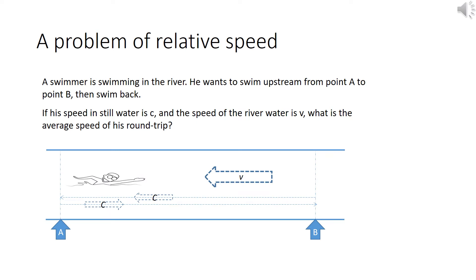Let's consider this problem. A swimmer is swimming in the river. He wants to swim upstream from point A to point B and then swim back. If his speed in still water is C and the speed of the river water is V, what is the average speed of his round trip?